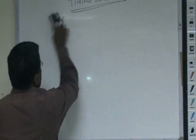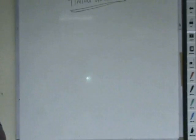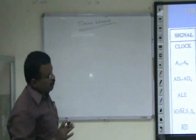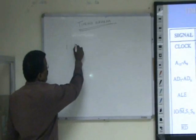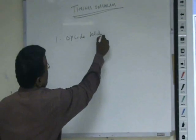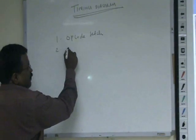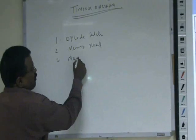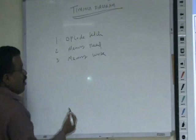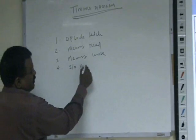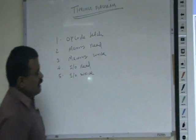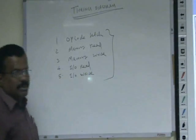Now, if you look into any microprocessor — whether it is 8085, 8086, or whatever — the various operations performed by any microprocessor are only five. Number one is opcode fetch; it can fetch an instruction. Number two is it can fetch data from memory, called memory read. Number three is it can write something into memory, called memory write. Or it can read data from I/O devices, called I/O read. Or it can write something into I/O devices, called I/O write. These are the five different operations performed by any microprocessor.